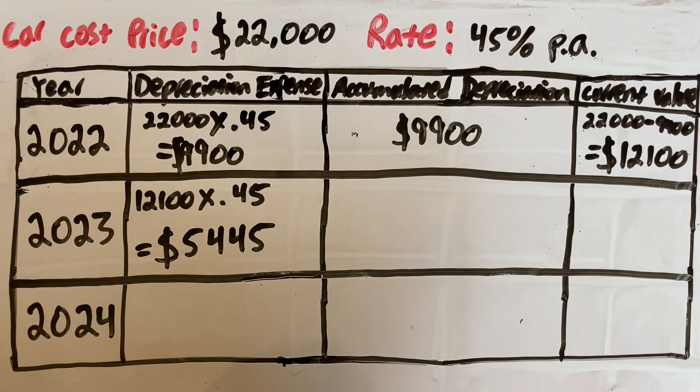Each year, the depreciation amount decreases as we want to report more depreciation expense in earlier years than later years. For assets that lose value more in earlier years than later years, we want to accurately represent that and we do that by using the reducing balance method.